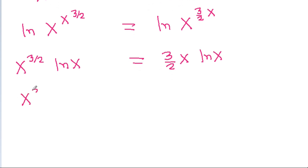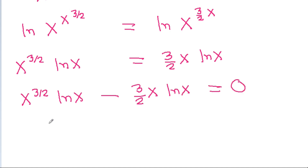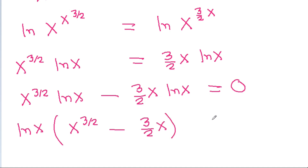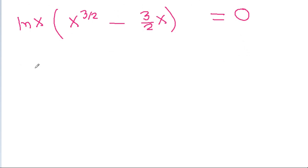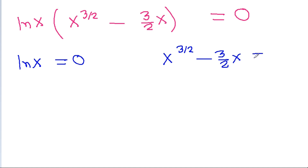So x power 3 by 2 times ln x minus 3 by 2 x times ln x is equal to 0. If we take ln x common, then we get x power 3 by 2 minus 3 by 2 x is equal to 0, and we get either ln x is equal to 0 or x power 3 by 2 minus 3 by 2 x is equal to 0.